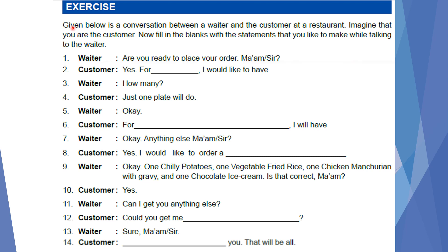Now we shall solve this exercise. Given below is a conversation between a waiter and the customer at a restaurant. Imagine that you are the customer. Fill the blanks with the statements that you would like to make while talking to the waiter. First: Waiter asks, 'Are you ready to place your order, sir?' You as a customer will say, 'Yes, for starters I would like to have chili potatoes.' Waiter: 'How many?' Customer: 'Just one plate will do.'